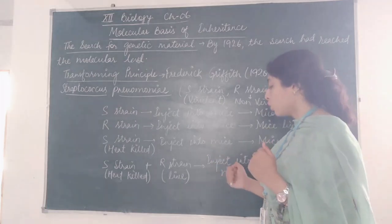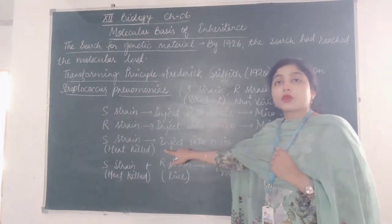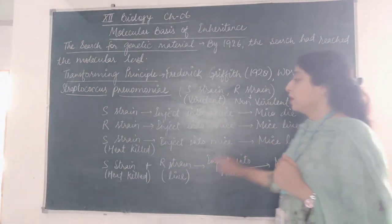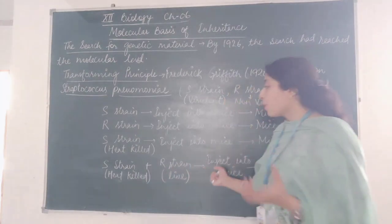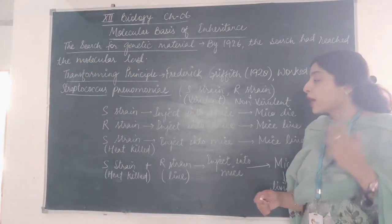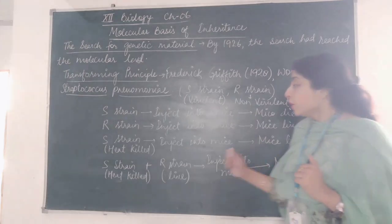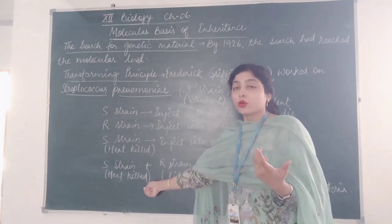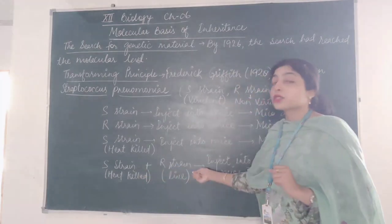Griffith heat-killed S-strain and then injected it into mice along with R-strain. Theoretically, they expected that the mice would not die, because the S-strain given was heat-killed and no longer virulent, and R-strain does not cause pneumonia.